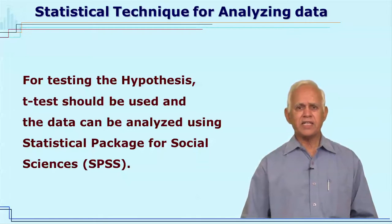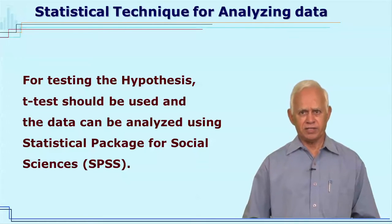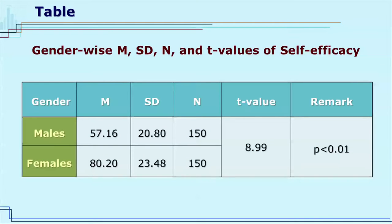For testing this hypothesis, the t-test is to be used and the analysis has to be done with the help of SPSS, which I will demonstrate later. From the output of SPSS, you can put the data in the table as shown on your screen. In the table, the information given includes gender, the mean, SD, and t-values. The title should be: gender-wise mean, SD, N, and t-values of self-efficacy.